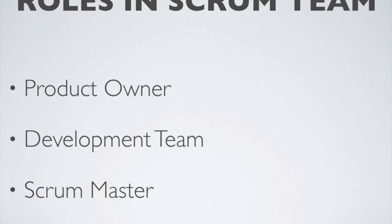The next role is the Development Team, which includes all the team members who are actually going to deliver the software or the work planned in the sprint. Every member of the delivery team is a Development Team member. There is no separate solution architect, tester, or developer title — the whole team is structured as a dev team.